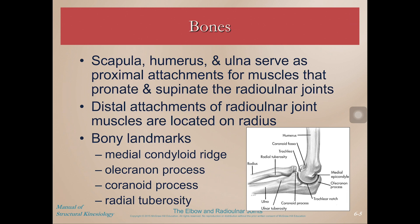The primary movements of the radial ulnar joint are pronation and supination. Key bony landmarks include the medial condyloid ridge, which runs above the medial epicondyle, the medial epicondyle, the olecranon process, and the coronoid process — which will be tough to palpate as it lies underneath the flexor wad where those muscles originate. The radial tuberosity, which we won't palpate, is where the biceps brachii inserts.